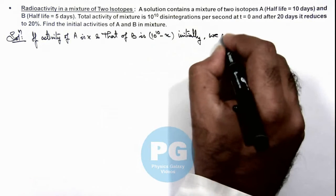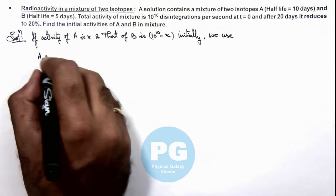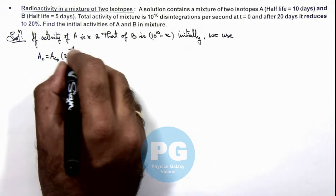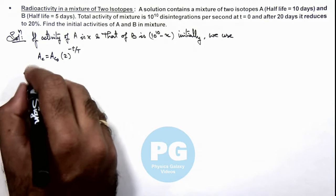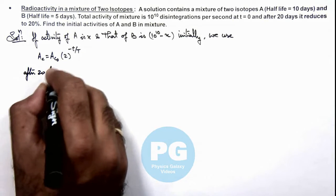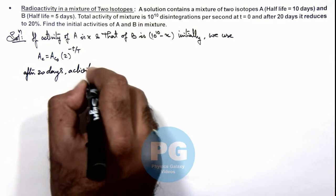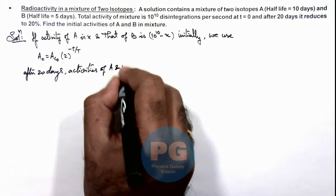Then here we can use the radioactive decay law as: activity equals activity_not times 2 to the power minus t by T. So we can write, after 20 days, the activities of A and B will be: